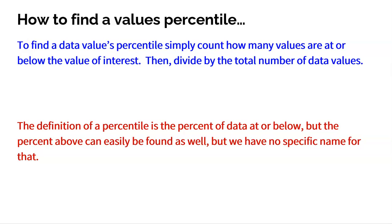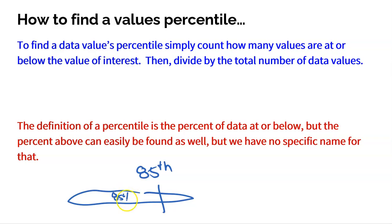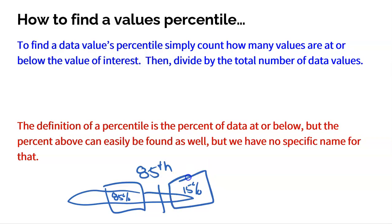The percentage above can easily be found as well, but we just have no specific name for it. Going back to the SAT example — we were at the 85th percentile, meaning 85% of scores are at or below our score. We know there are 15% of scores higher, but we don't have a name for that 15%. A percentile is a specific term used only for the percentage at or below; the above is easy to find but has no specific name.